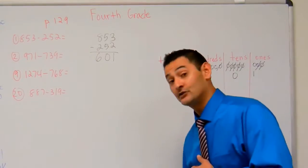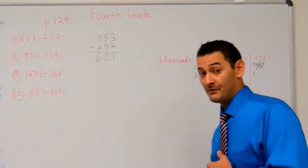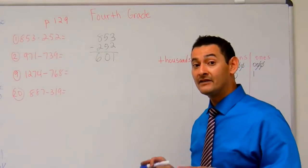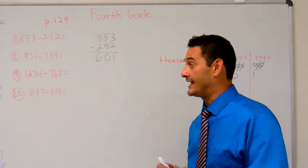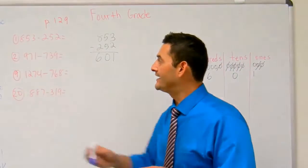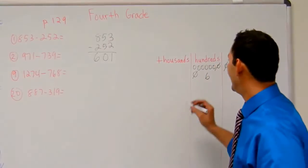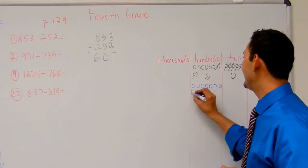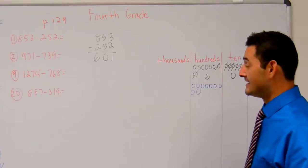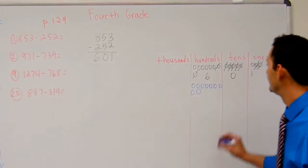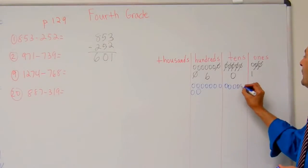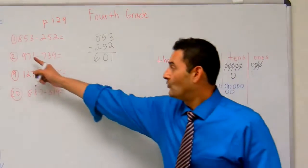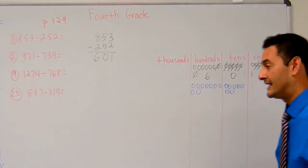Now let's take a look at number two. Number two reads 971 minus 739. So let's go ahead and fill that in. I've got nine hundreds — one through nine. I've got seven tens — one through seven. And I've got one in the ones place, just one.